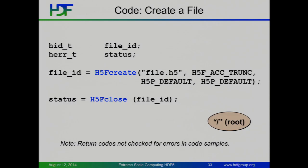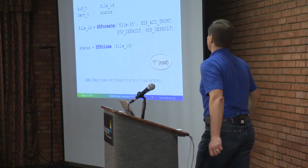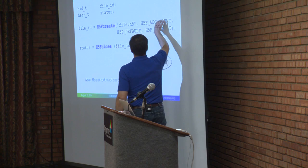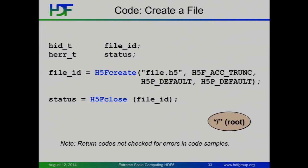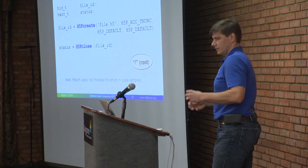The simplest thing: create a file. You say, create me this file. I want to blow away the existing thing. I've got default properties for this file. You pass in some file name, you get back a file ID — some token to work with for that file — and you close it. Trivial. That will create you a file with a root group in it and nothing else.